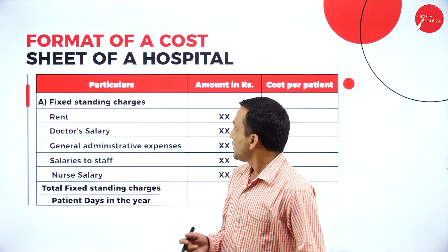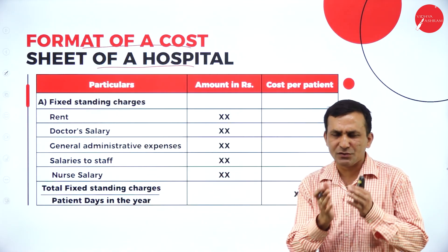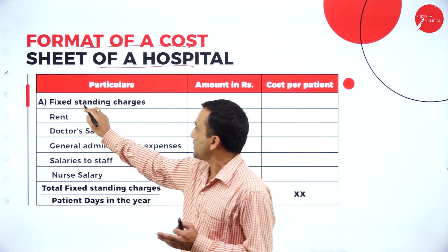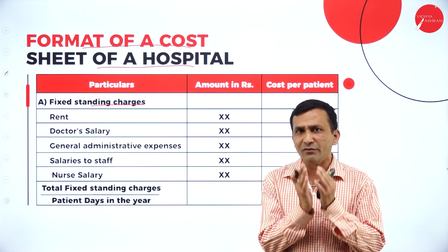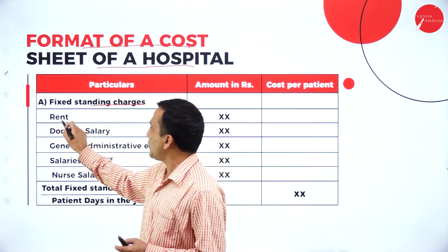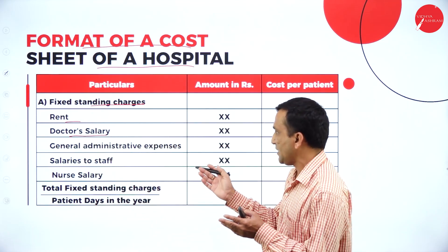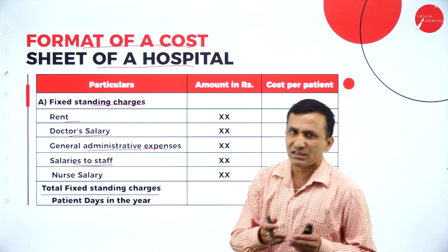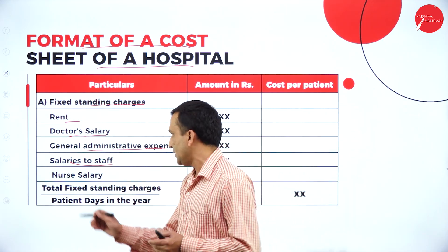Moving forward for the format — the format of the cost sheet for the hospital service sector is similar to transportation operating cost. First we will consider the fixed standing charges. Under fixed standing charges, the charges are always fixed for the hospital. Items include rent for the building premises, the doctor's salary, general administration expense, and salary to all staff — nurse, attender, helper, warden — which all come under fixed costs.